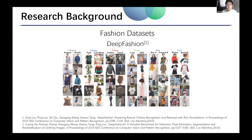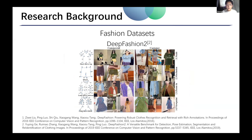Several fashion datasets have been proposed for the advancement of fashion image understanding research. For example, DeepFashion is a large-scale clothing database containing over 800,000 diverse fashion images. Each image is labeled with 50 categories, 1,000 descriptive attributes, bounding boxes, and clothing landmarks. But it lacks sketches and images of shoes. DeepFashion 2 is bigger than DeepFashion, but still has the same problems.